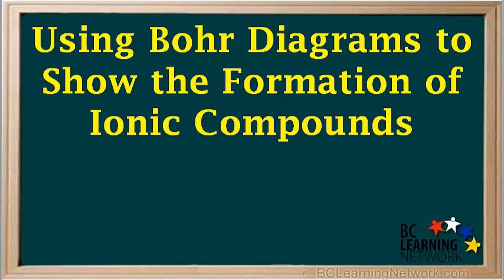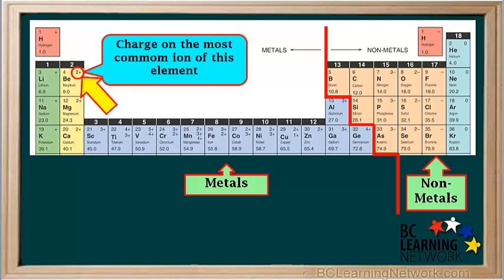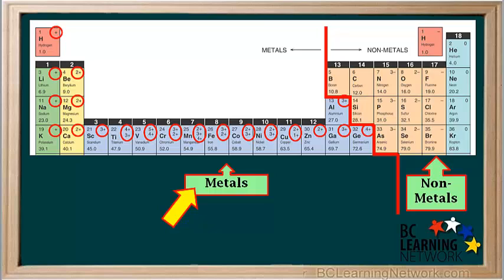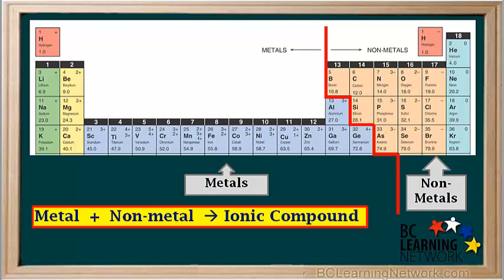In this video, you'll see how Bohr diagrams or Bohr models can be used to show how ionic compounds are formed from elements. If you look on this periodic table and locate element number 4, beryllium, you'll see that the charge of the most common ion formed by an element is written on the top right of its box. Notice that metals form positive ions, while nonmetals form negative ions. Ionic compounds form when a metal and a nonmetal combine chemically. Let's do a couple of examples.